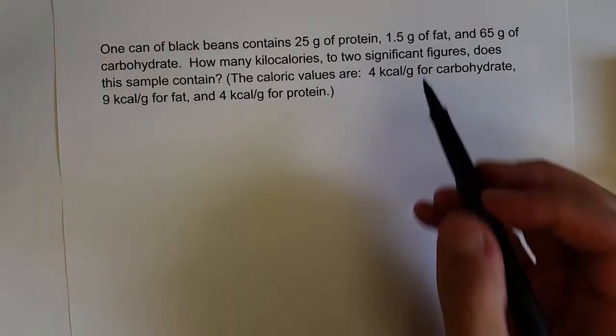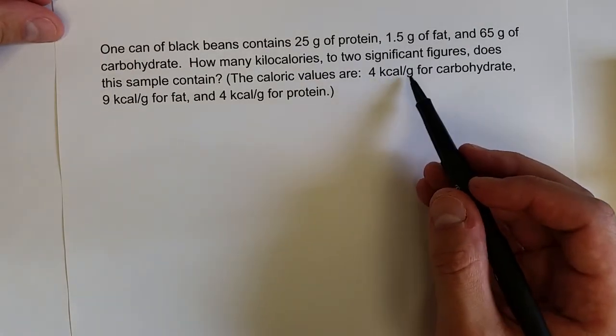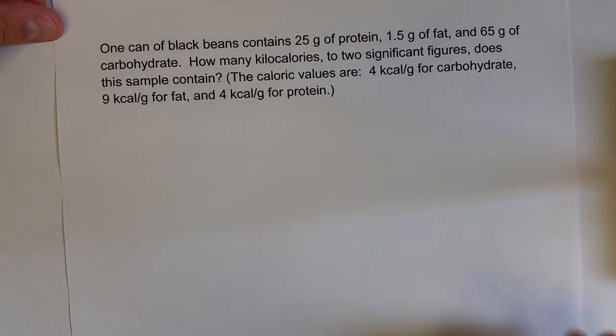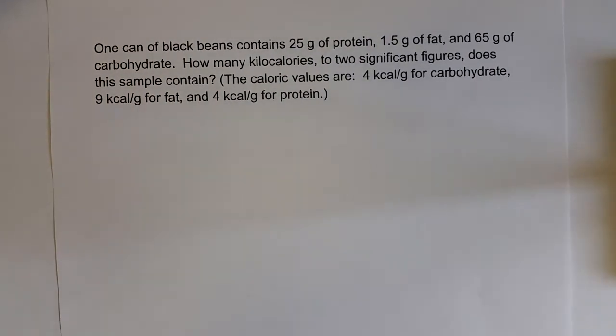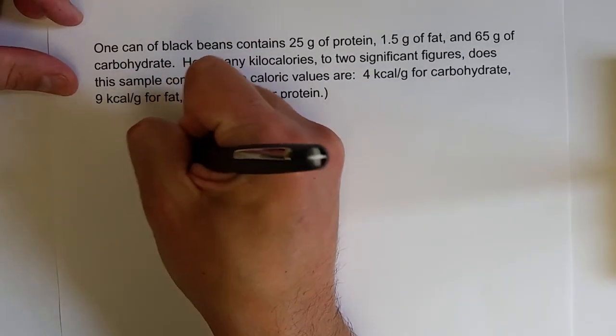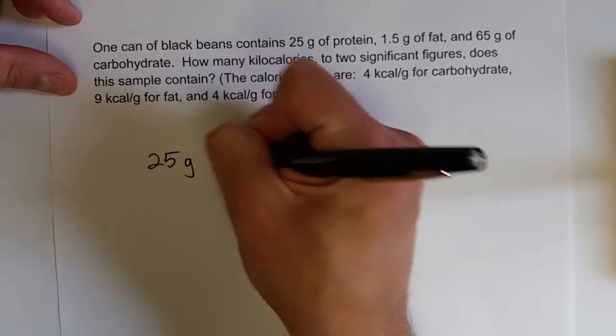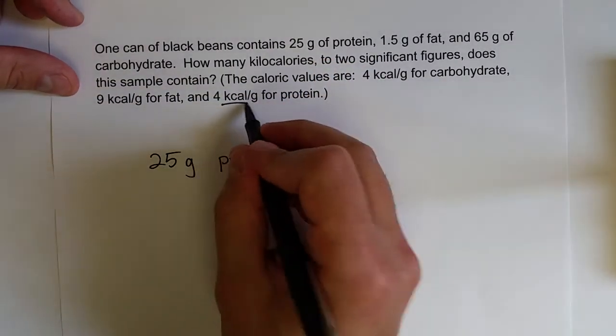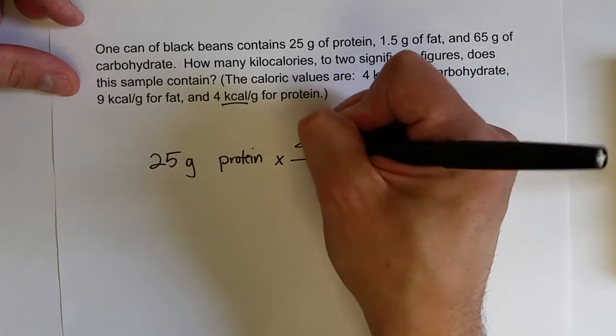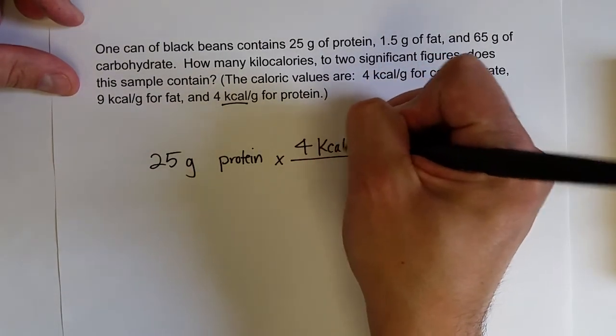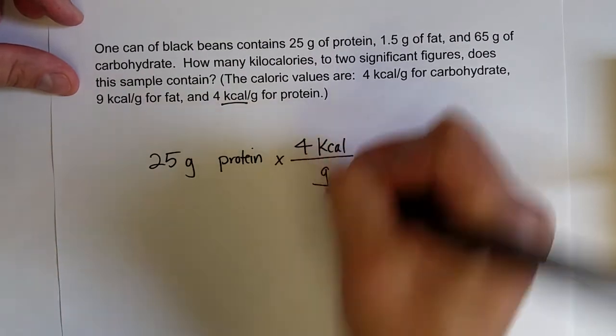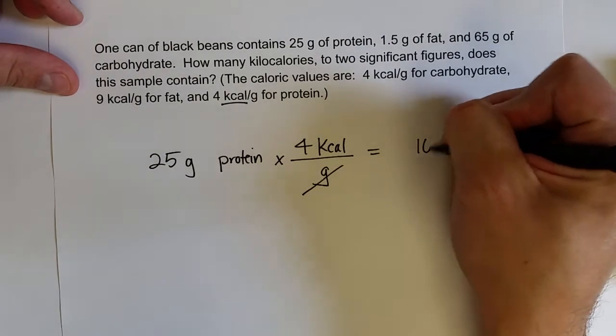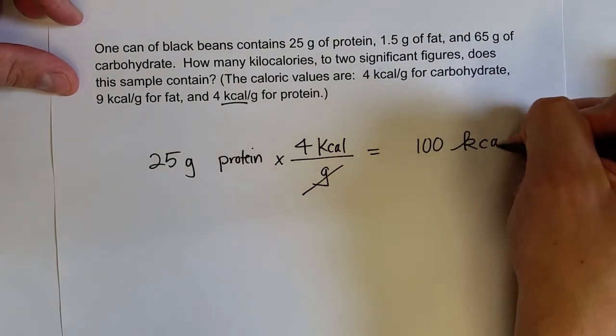All right, so generally what you do is you need to use these values, kcal's per gram, as a conversion factor for each of the different types of molecules, and then sum them at the end. So this sample, this can of black beans, has 25 grams of protein. And as we just said, there's four kilocalories, kcal's, per gram of protein. And so 25 times 4 is 100 kcal's.